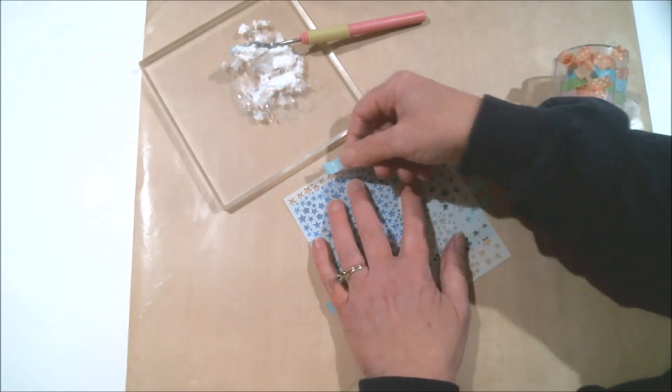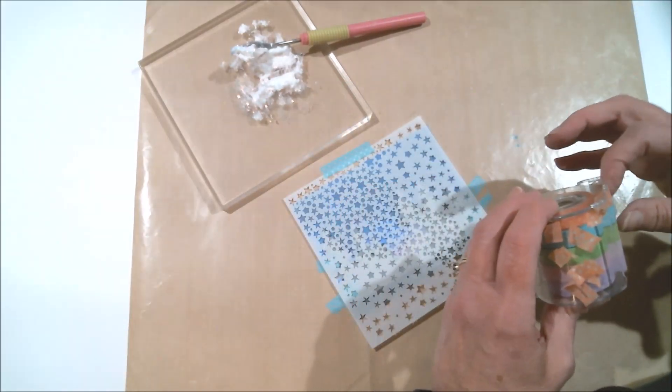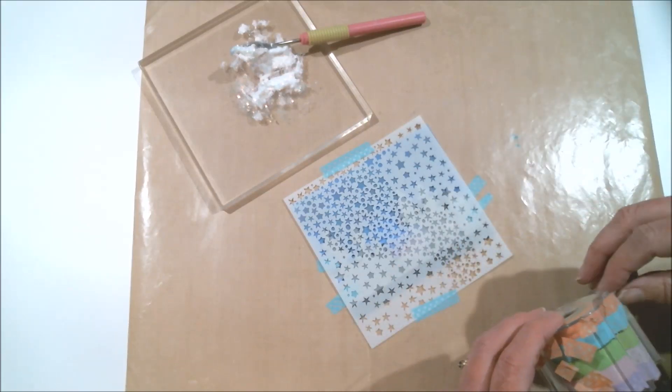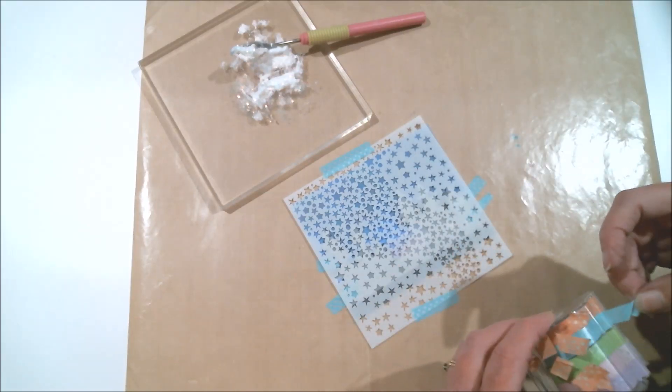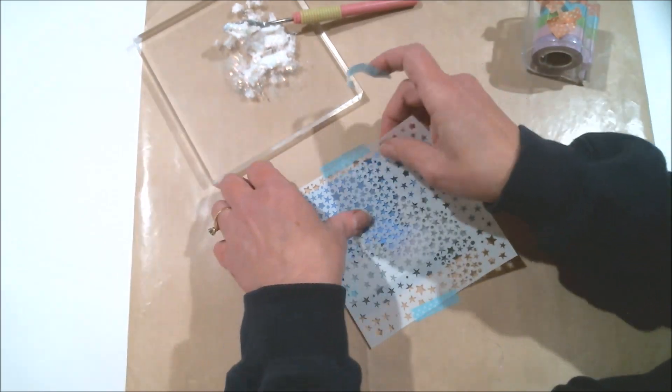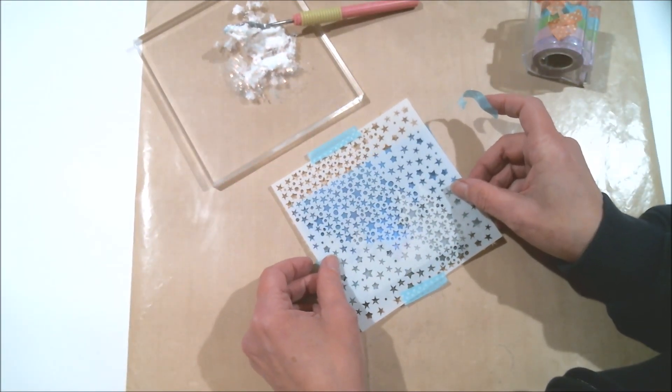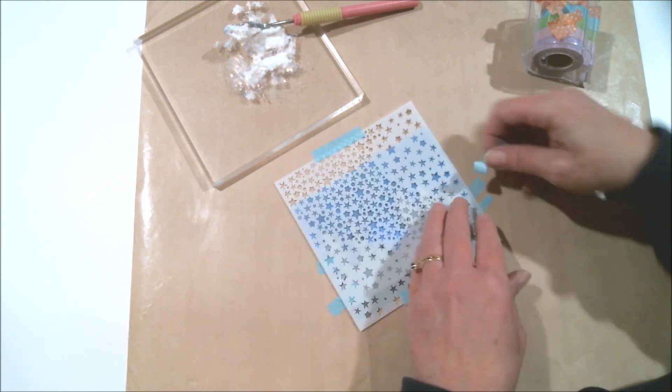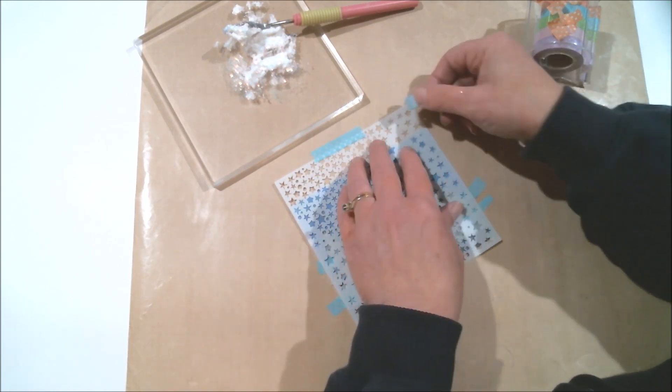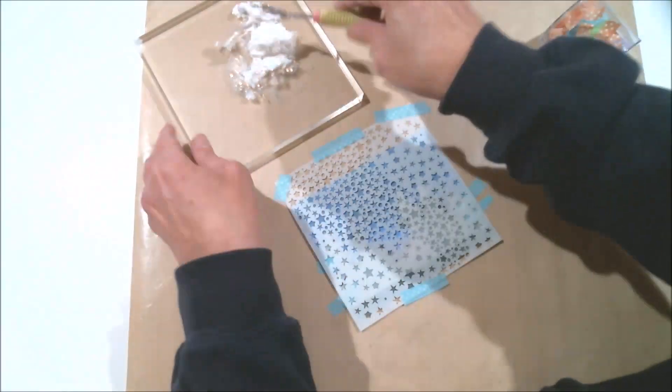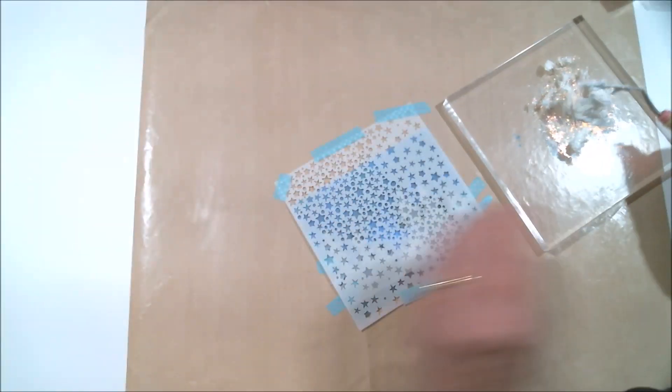Here I am using washi tape again. I could have used Pixie Spray to hold the stencil in place, but I wasn't sure how it would react with the Distress Oxide ink. And I'm glad I didn't use it because I had to reposition the stencil and I'm afraid the Pixie Spray might have left some residue behind. But everything stayed in place pretty good with the washi tape. Okay, I think I'll be doing the stenciling with a little music.